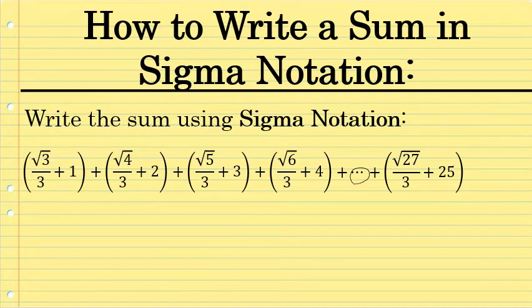So there's a lot of terms in this sum. Only five of the terms have been written out. But you should be able to see from plus 1, plus 2, plus 3, the whole way up to plus 25, that there are actually 25 terms in this sum. There's a pattern that exists in this sum. And because there is a pattern, we can write it using sigma notation.